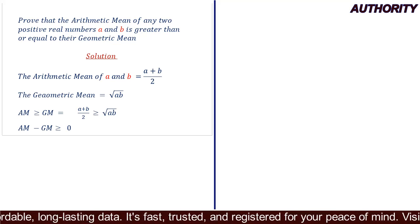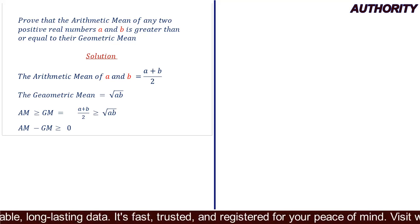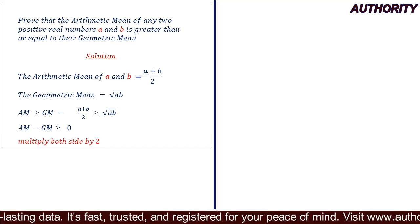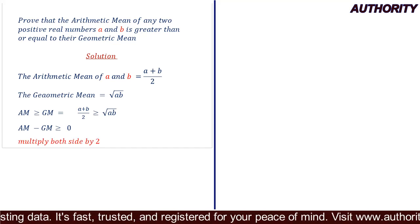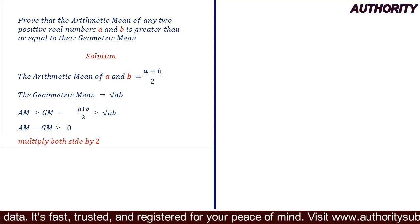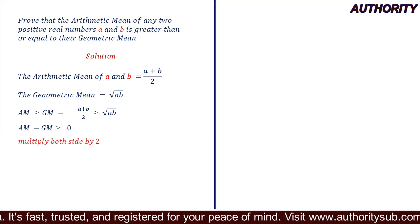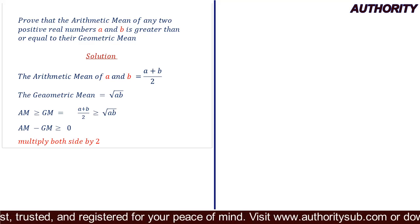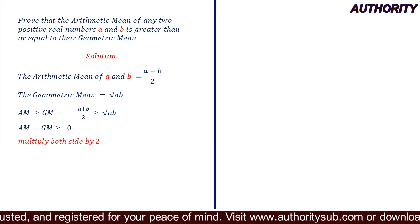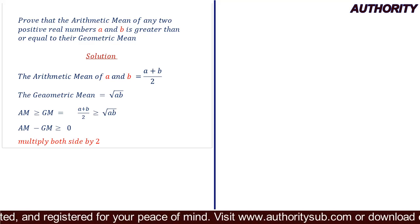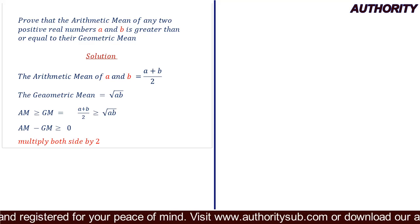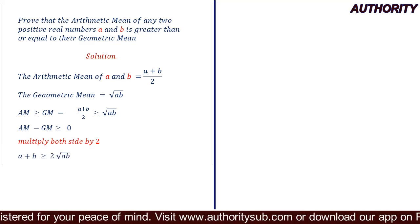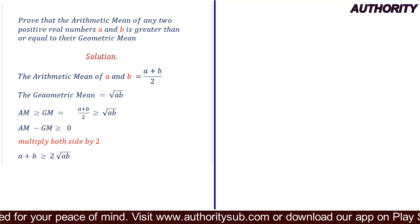First, let's clear the fraction. We multiply both sides by two, so the fraction goes away. We get: a + b ≥ 2√(ab).